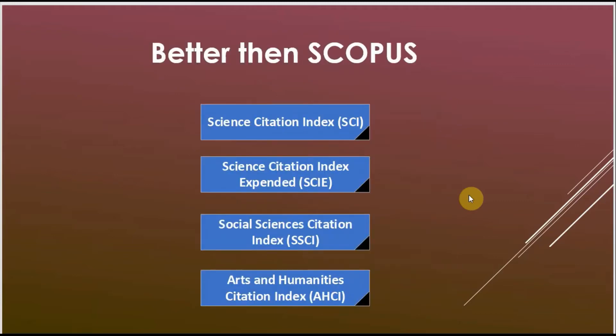Now many people ask: which one is better, Scopus or Web of Science? Of course Web of Science is better — if the journal belongs to SCI, SCIE, SSCI, or AHCI. If the Web of Science indexing belongs to those four categories, then definitely that journal is better than a journal listed only in Scopus.